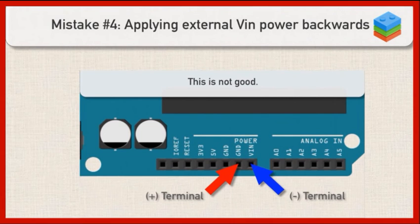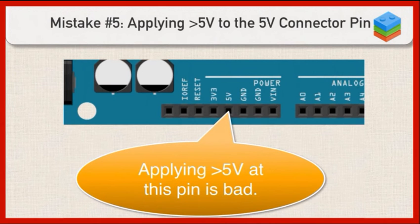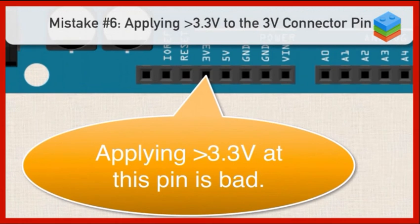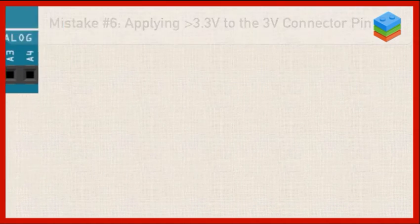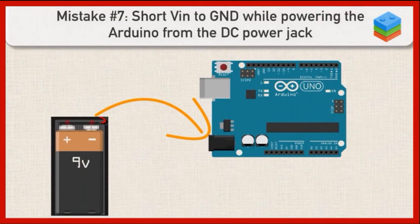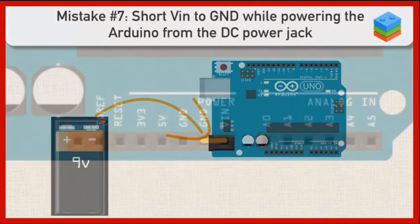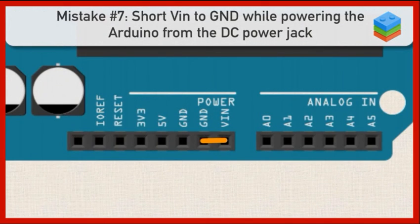If you're going to apply power to the Arduino through the VIN header connectors, make sure not to reverse the polarity of the VIN ground power connections. Do not apply greater than 5 volts to the 5-volt connector pin on the Arduino. You don't want to apply more than 3.3 volts to the 3.3-volt connector pin. If you're powering the Arduino using the DC power jack, you don't want to short VIN to ground.